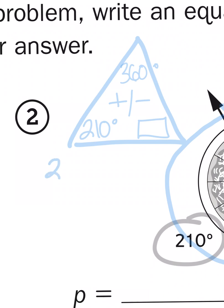So I know that 210 plus something gives me 360. I'm going to just turn that around. 360 minus 210 leaves me with something. What's my missing angle measurement?